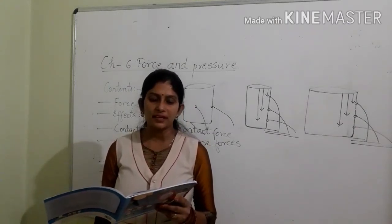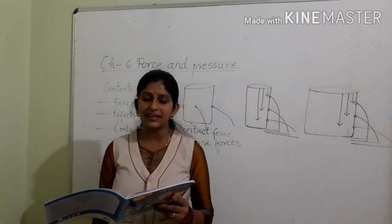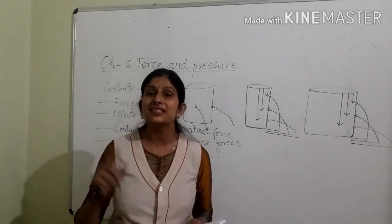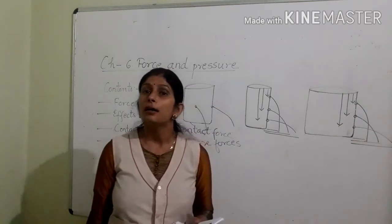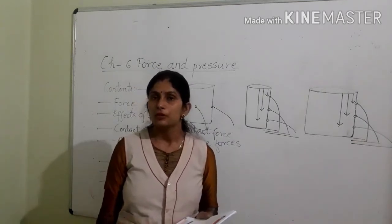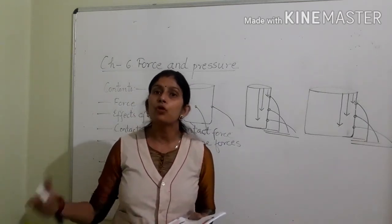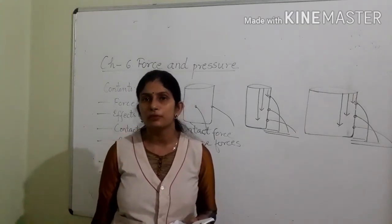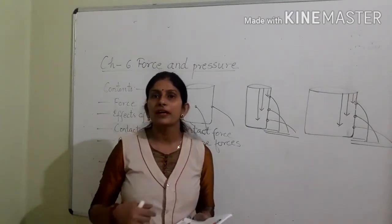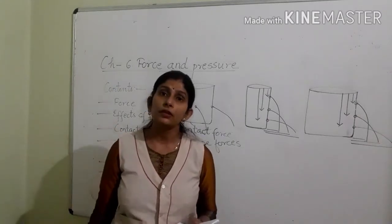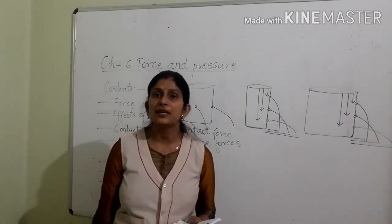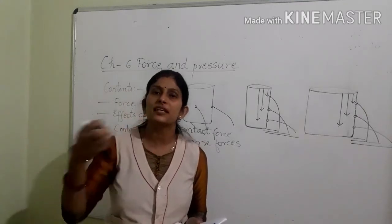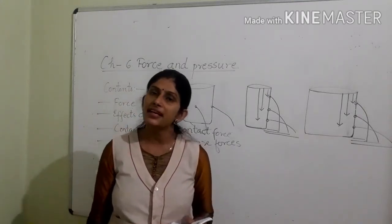Why does a person weigh lesser on the moon than he does on earth? Because gravitational force is directly proportional to the masses of the objects. Earth, having more mass, exerts more gravitational force on an object, resulting in more weight. But moon, having less mass, exerts less gravitational force on the same object, resulting in less weight.